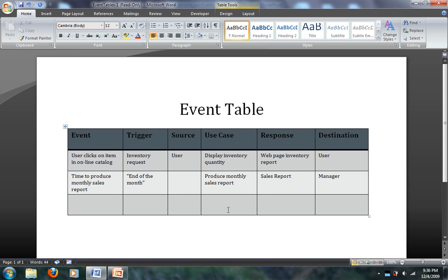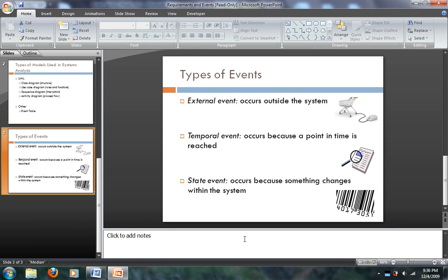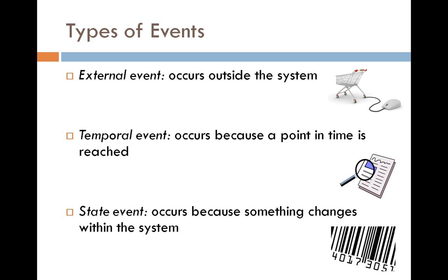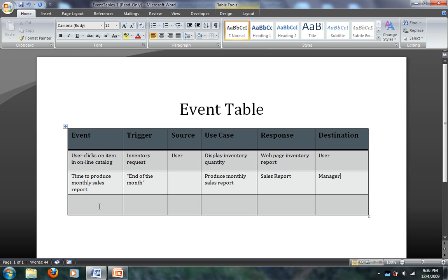Let's keep on going here. And now we're going to look at the state events. So the state events occurs because something changes within the system. So we've already done our external event of a customer looking up the available inventory online. We've seen sales reports, and now let's think of a case that a retail store might run into. Inventory is low. The system recognizes that the inventory is low. So there's going to be a need to reorder more inventory. So let's go back to our event table and create this event. What's the event going to be in this case? The reorder point is reached.